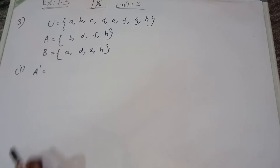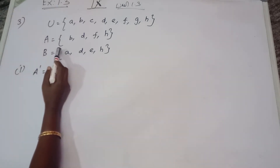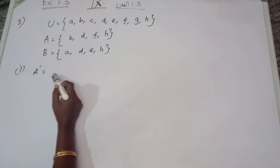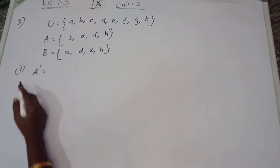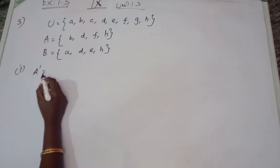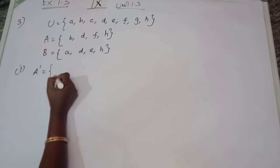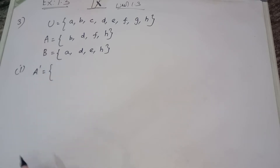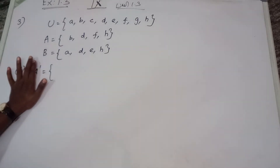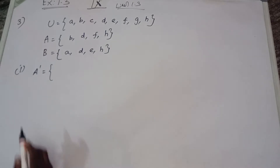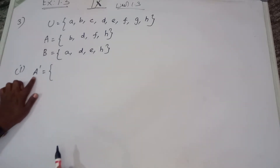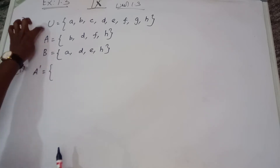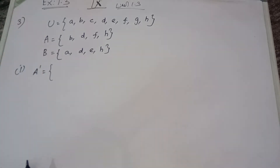First, we will find A dash (A'). How to find A dash? The element which is not in A, but in the universal set — it is the complement set, complement of A. Element which is not in A but in the universal set.